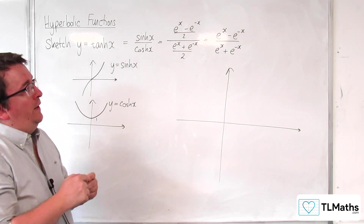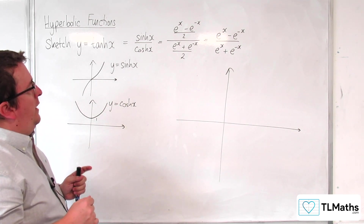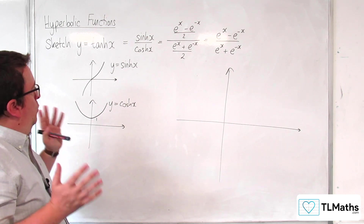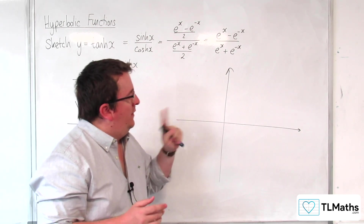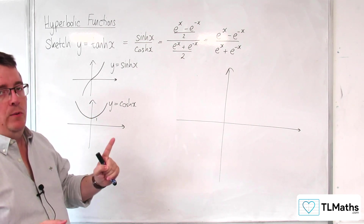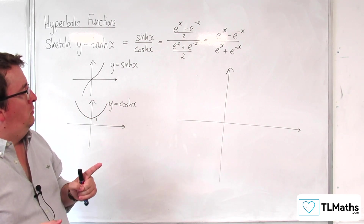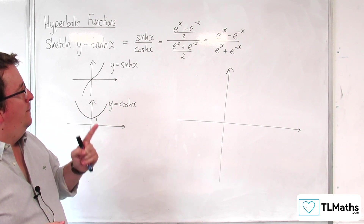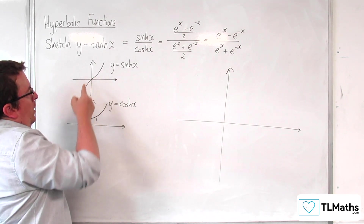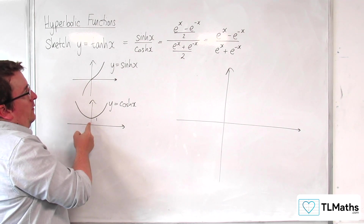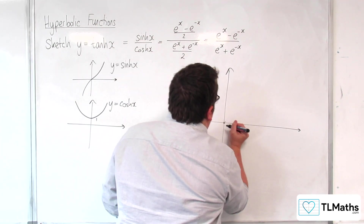Well, first things first. If we consider what's happening — let's think about what's happening when x is 0. When x is 0, we are going to have sinh, which is 0, over 1. So that means we're going through the origin.